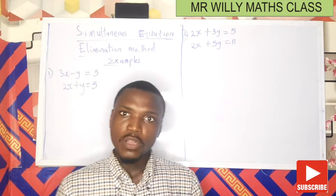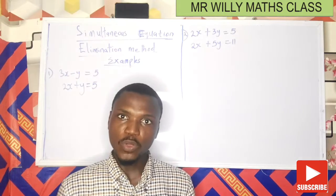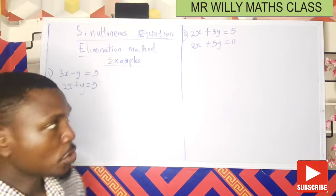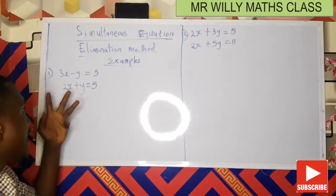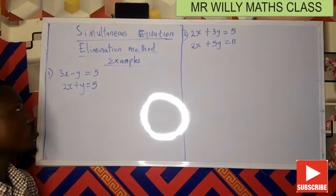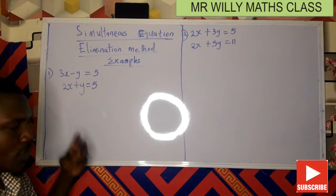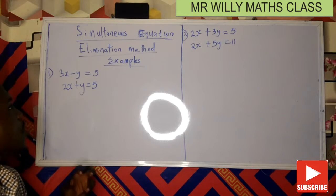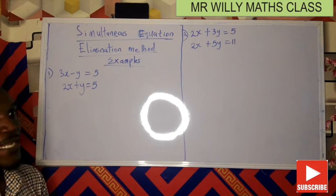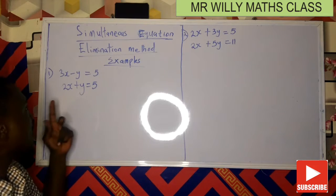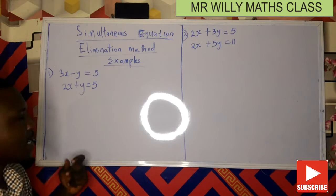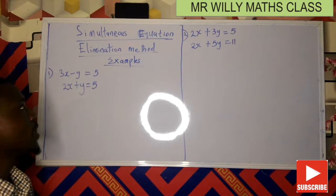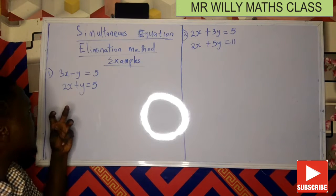Let's look at our first example. We have 3x minus y equals 5, and 2x plus y equals 5. We need to get rid of one of the variables — either x or y — then solve for whichever is left.